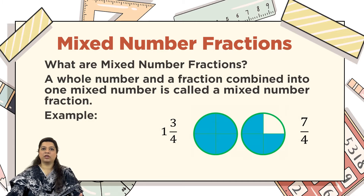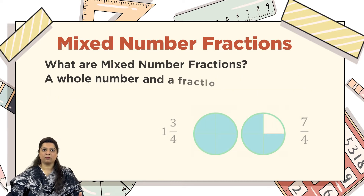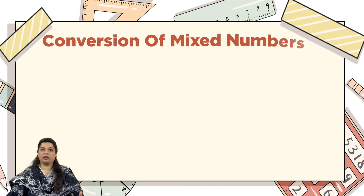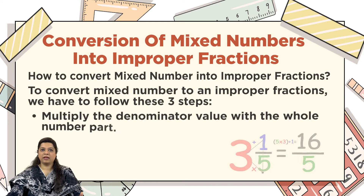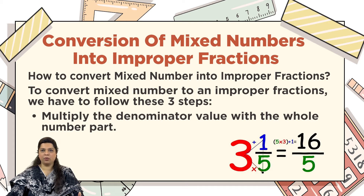Therefore, the graphic representation of the mixed number 1 whole number 3 upon 4 can be seen in front of you, which can be transformed into an improper fraction: 7 upon 4. Now let's see how we arrive at 7 upon 4. We need to follow three steps.